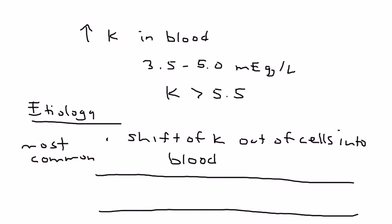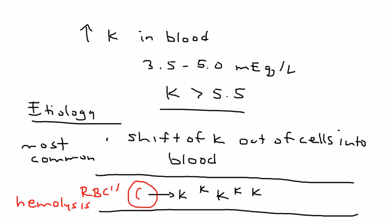A perfect example is what happens with red blood cells. This is a blood vessel and inside you've got these red blood cells. Sometimes hemolysis can occur, and when that happens the potassium comes out of the cells into the bloodstream, resulting in an increased potassium value when you measure it in the serum.